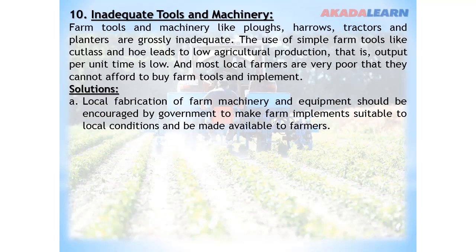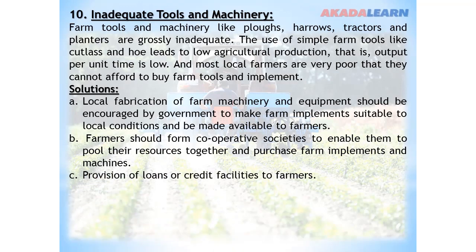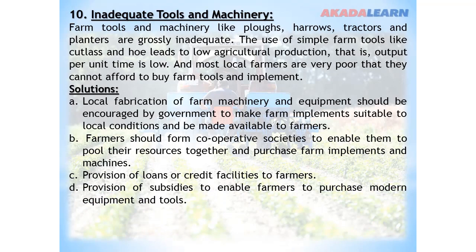Solutions to this problem: Local fabrication of farm machinery and equipment should be encouraged by government to make farm implements suitable to local conditions and available to farmers. Farmers should form cooperative societies to pool their resources together and purchase farm implements and machines. Provision of loans or credit facilities, and subsidies to enable farmers to purchase modern equipment and tools.